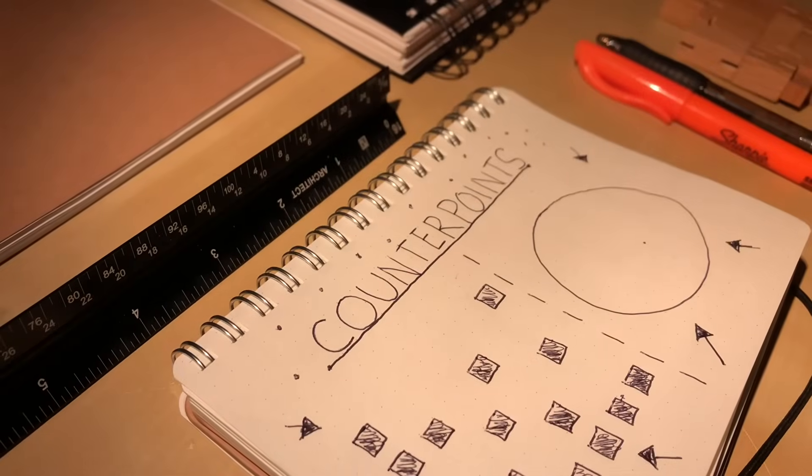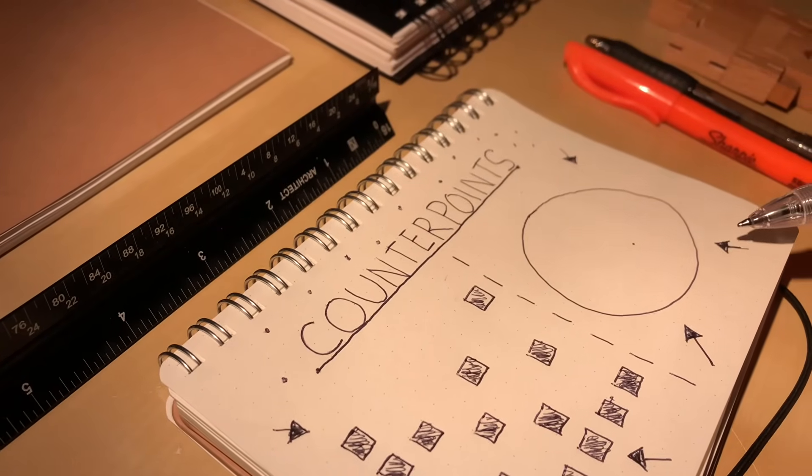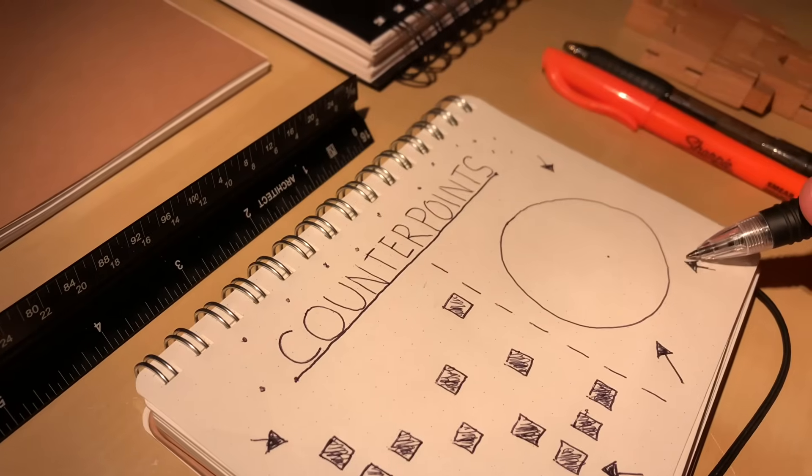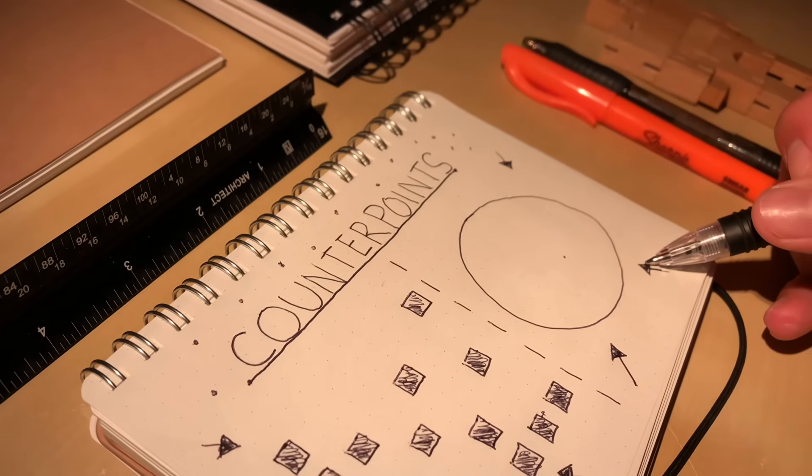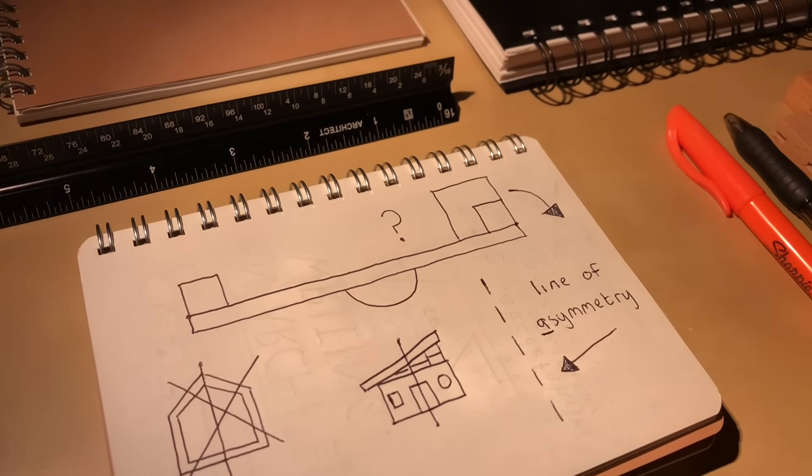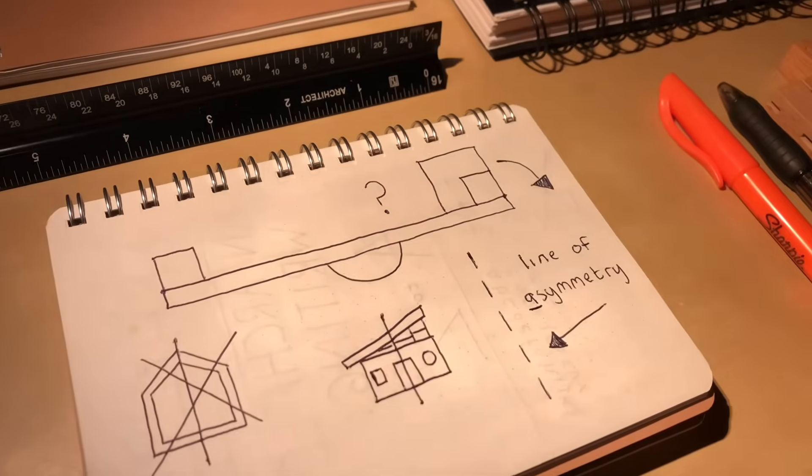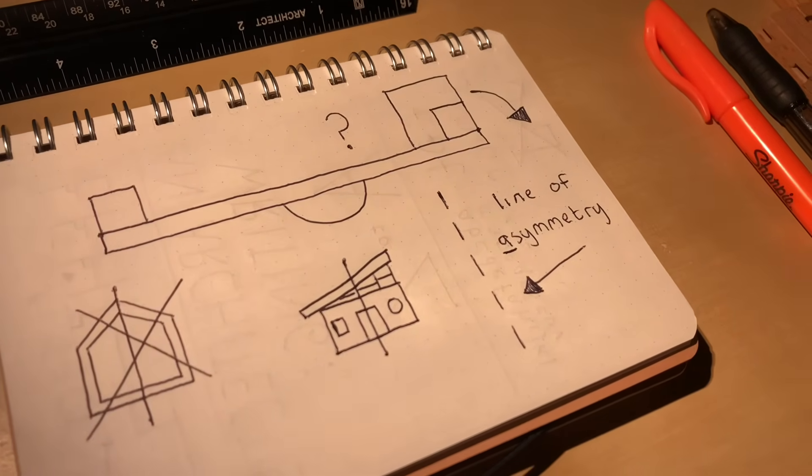Now, this drawing is a very basic form of asymmetry. Obviously, when it comes to actual architecture, counterpoints will definitely vary in shape and size. But the idea of achieving balance through these counterpoints remains the same like a common thread throughout many examples of asymmetrical architecture.